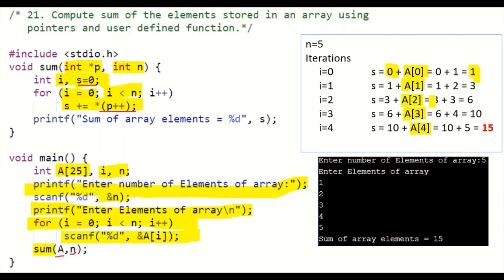Each value gets added to the previously accumulated sum, and at the end of the last iteration you will get the result as 15.